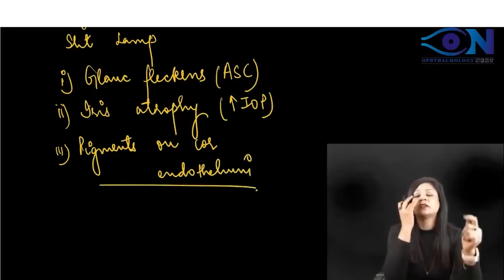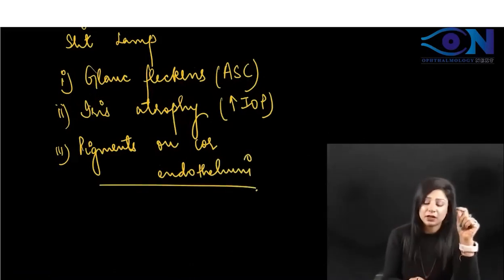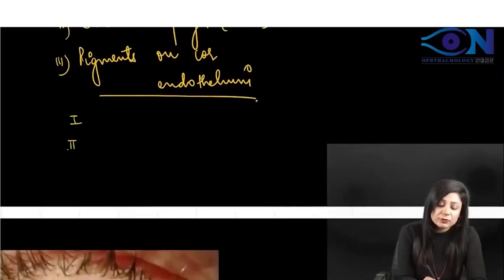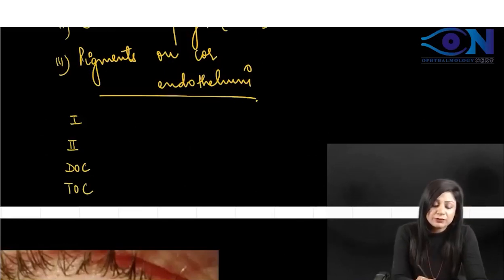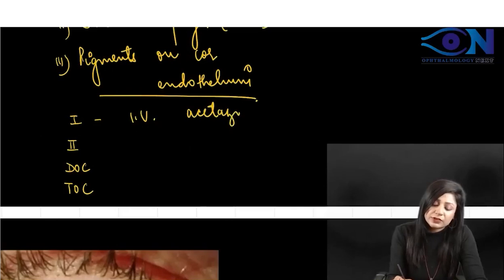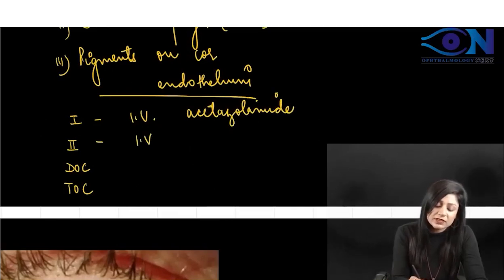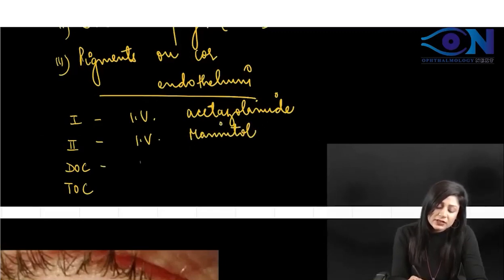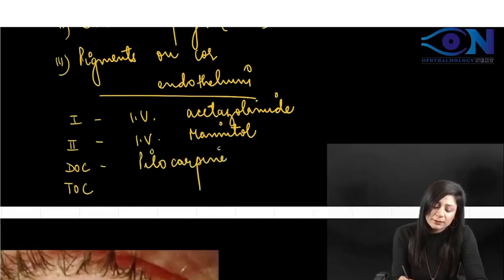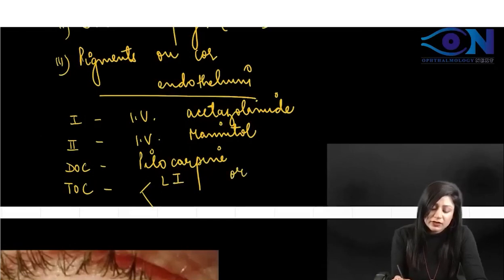Now regarding treatment: the first drug to be given is IV acetazolamide. The second drug to be given is IV mannitol. The drug of choice is pilocarpine. The treatment of choice is laser iridotomy or surgical peripheral iridectomy (PI). Acetazolamide and mannitol are not the drug of choice — they are just the first and second drugs to be used.